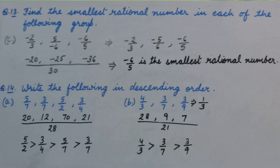Here we are comparing part C: minus 2 upon 3, 5 upon minus 6, minus 6 upon 5. We can see the denominator is negative, so we will make it positive. So 5 upon minus 6 will become minus 5 upon 6.